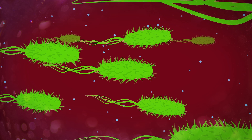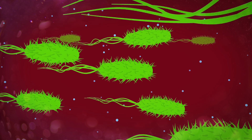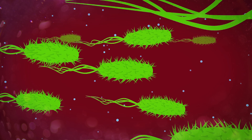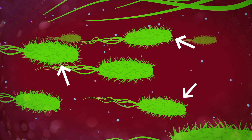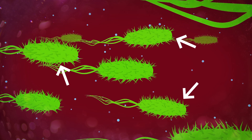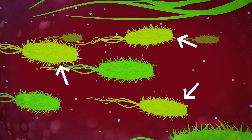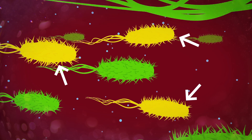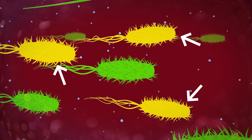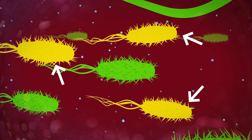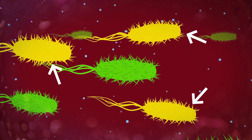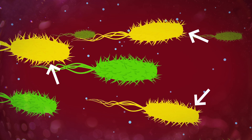What is antibiotic resistance? Bacteria naturally evolve to develop ways of not being killed by antibiotics. When this happens, these bacteria are known as antibiotic-resistant bacteria.